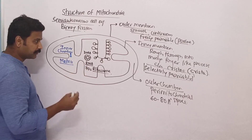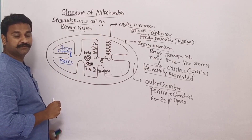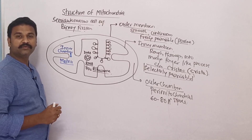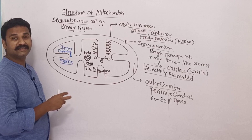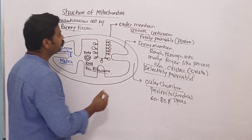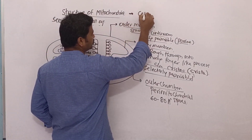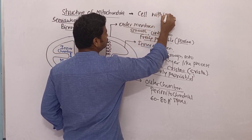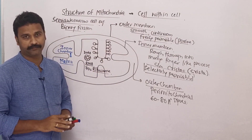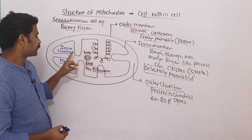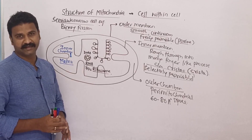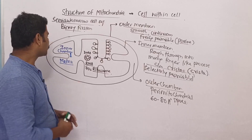Since mitochondria has its own DNA, RNA, and 70S ribosomes, and its outer membrane is freely permeable due to porins, all these features are similar to bacterial cells. There is a theory suggesting that mitochondria is actually a prokaryotic cell living inside a eukaryotic cell, which is why mitochondria is also called 'cell within a cell' or the endosymbiont of a eukaryotic cell.